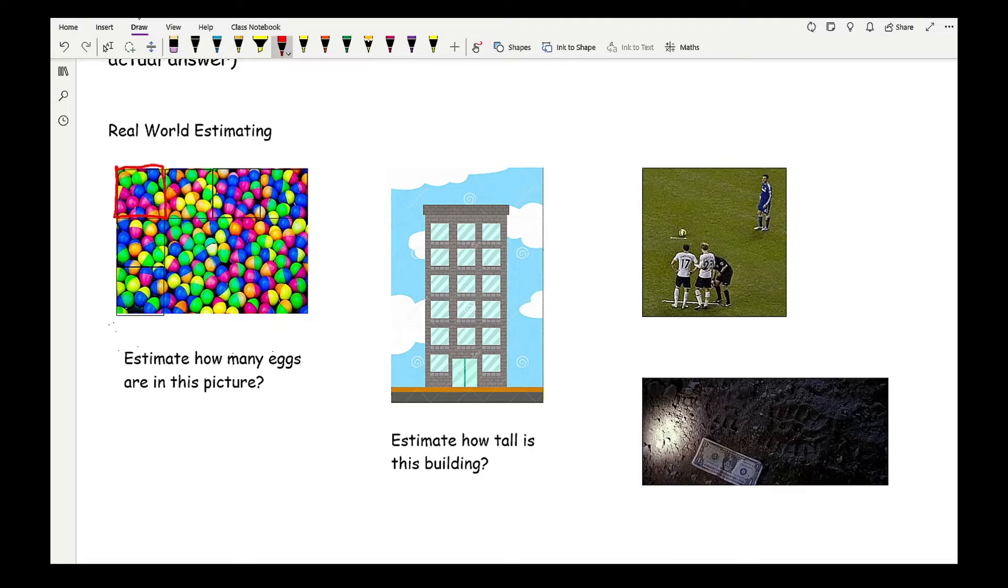Now if I count how many eggs I can see in one square, I count one, two, three, four, five, six, seven, eight, nine, ten, eleven, twelve. I can see that I could probably fit about twelve squares. If I do twelve eggs times twelve boxes, then I would say an educated guess would be roughly that there are 144 eggs in that particular picture.